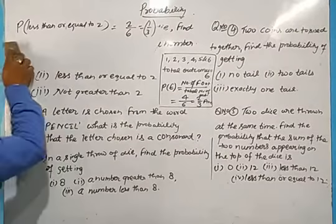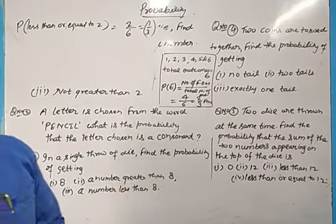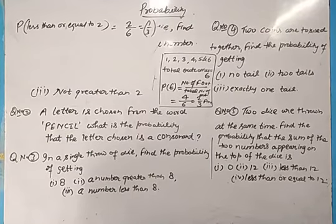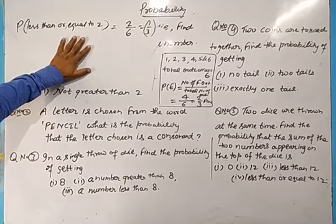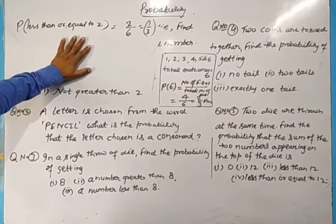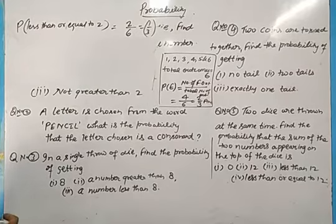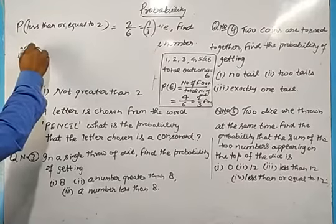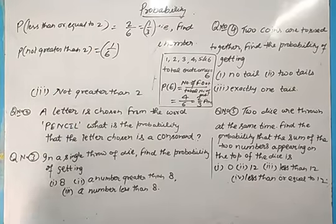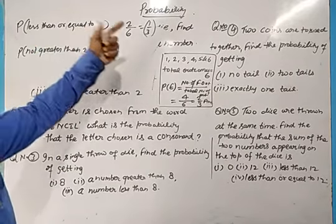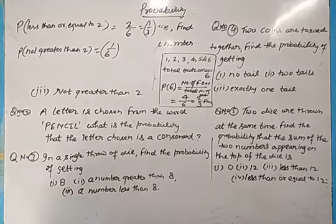The third part: probability of getting a number not greater than 2. Not greater than 2 means the number should not be more than 2. There is also a condition — whether 2 is involved or not. In the previous part, less than or equal to 2 was given, so 2 was included. For 'not greater than 2,' we consider only 1, so 1 is the favorable outcome. Therefore, the probability of getting a number not greater than 2 is 1 upon 6.